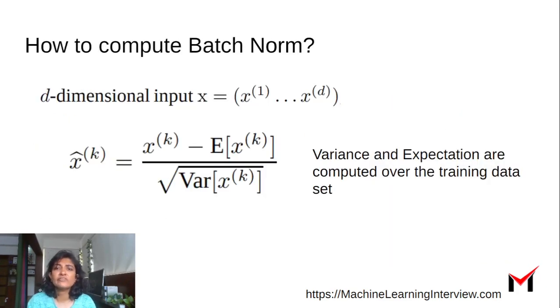So now let's see how we actually compute the batch norm. Let's say that the inputs to a particular layer are d-dimensional and you have x^(1) to x^(d). Batch norm is computed across a dimension. You take that particular dimension across all training examples and then subtract the mean and divide by the square root of the variance. For batch norm, we take all examples in the batch, take that particular dimension, and normalize.